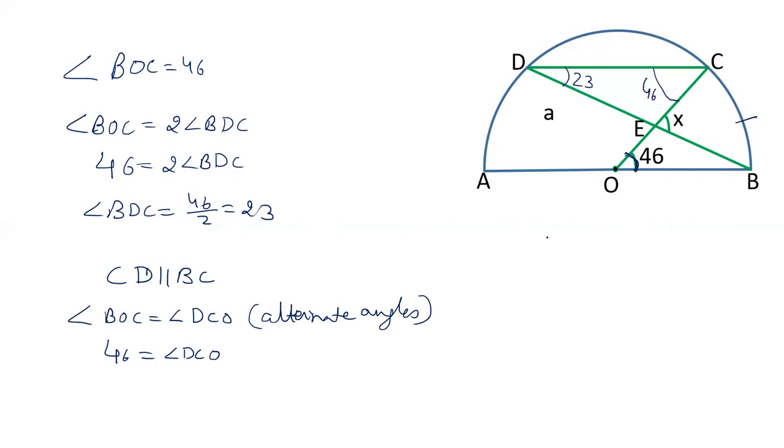Now see, in triangle CDE, angle BEC is an exterior angle, and the value of any exterior angle of a triangle is equal to the sum of interior opposite angles.